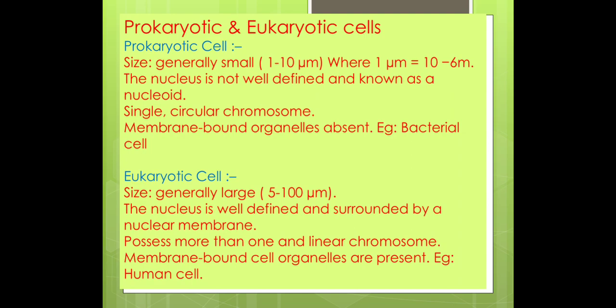Eukaryotic cells are generally much larger, ranging from 5 to 100 micrometers. The nucleus is well defined, prominently visible, and surrounded by a nuclear membrane. They possess more than one linear chromosome — for example, in humans there are the X and Y chromosomes, which are linear chromosomes. Membrane-bound cell organelles are present. An example of a eukaryotic cell is the human cell.